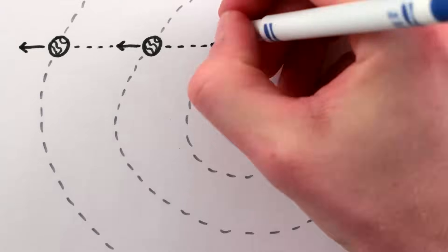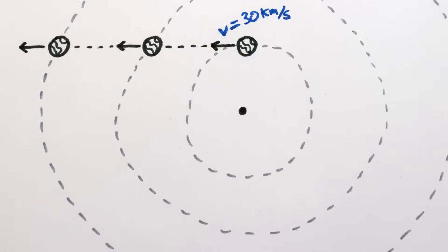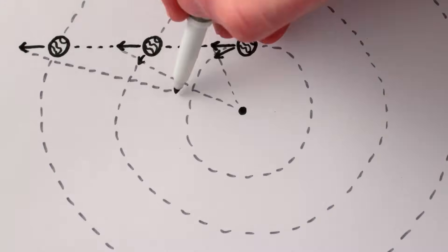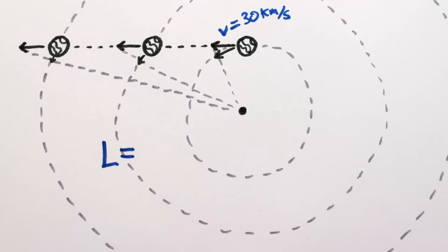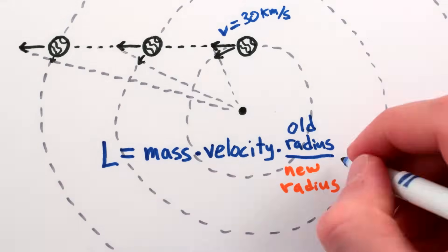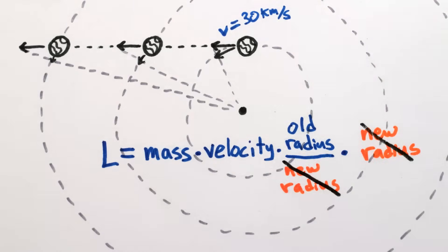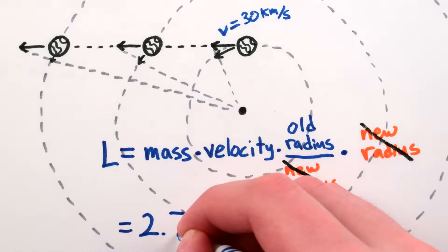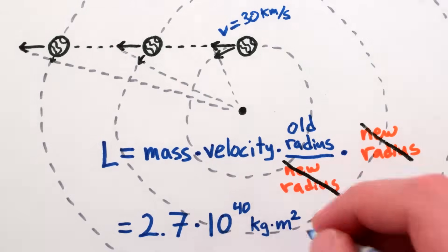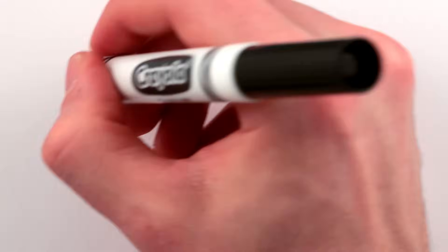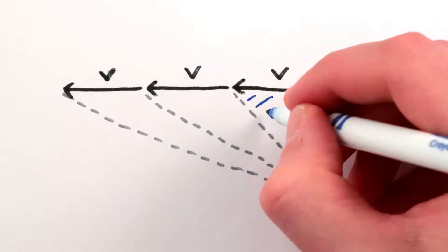But as the Earth continued through space, its 30 kilometer per second velocity would also point less and less along the circle, so when you calculated the angular momentum, the decrease in velocity would exactly cancel out the increase in the size of the circle, and you'd always get the same answer, 2.7 times 10 to the 40th kilogram meters squared per second. So even when nothing is rotating at all, angular momentum is still conserved.